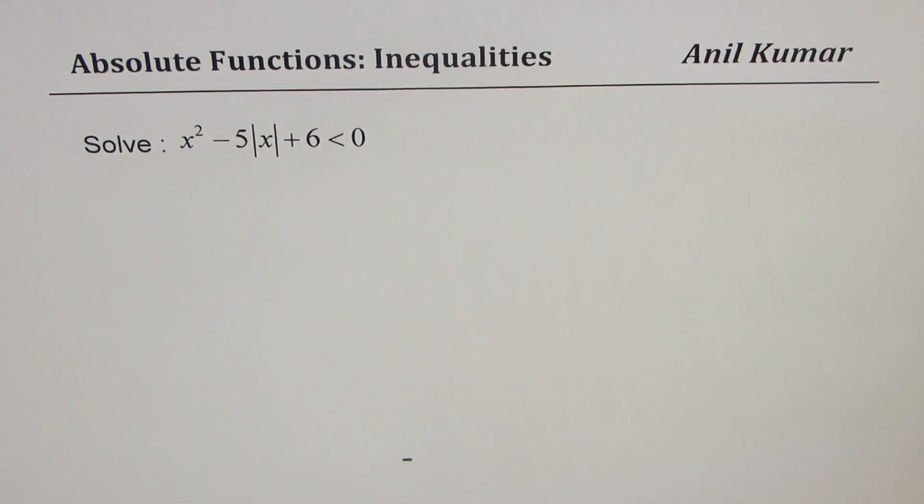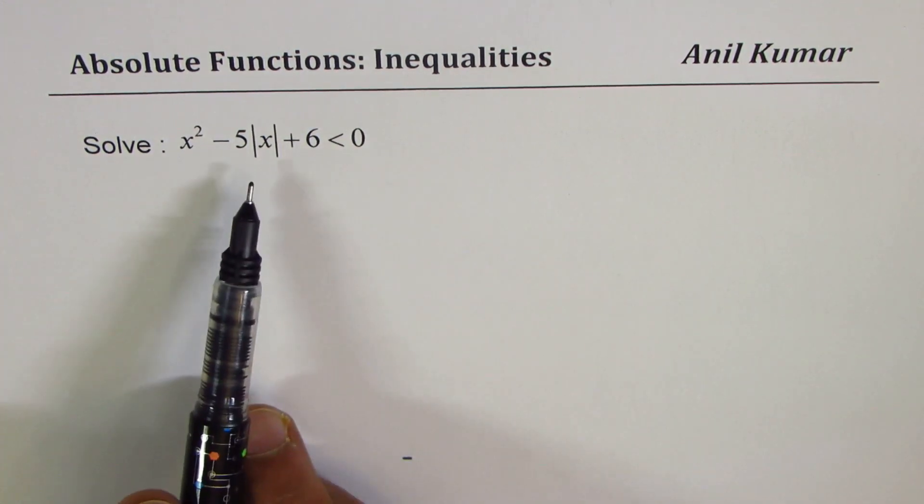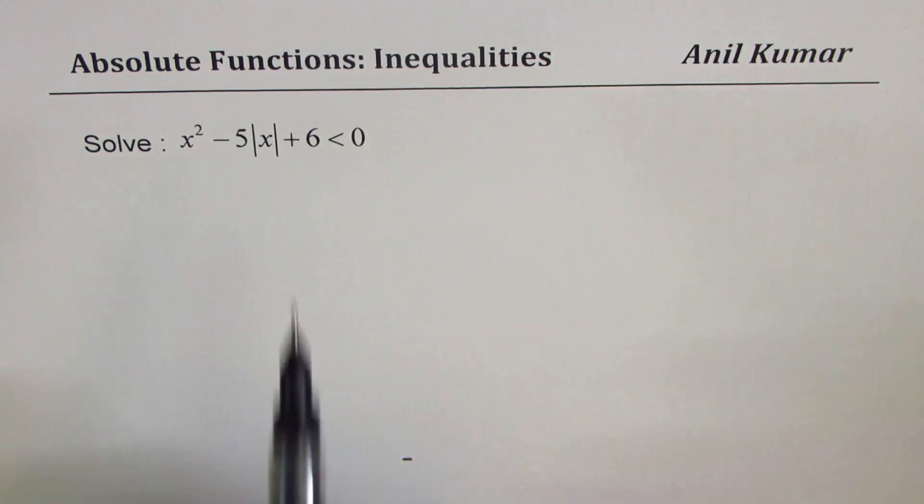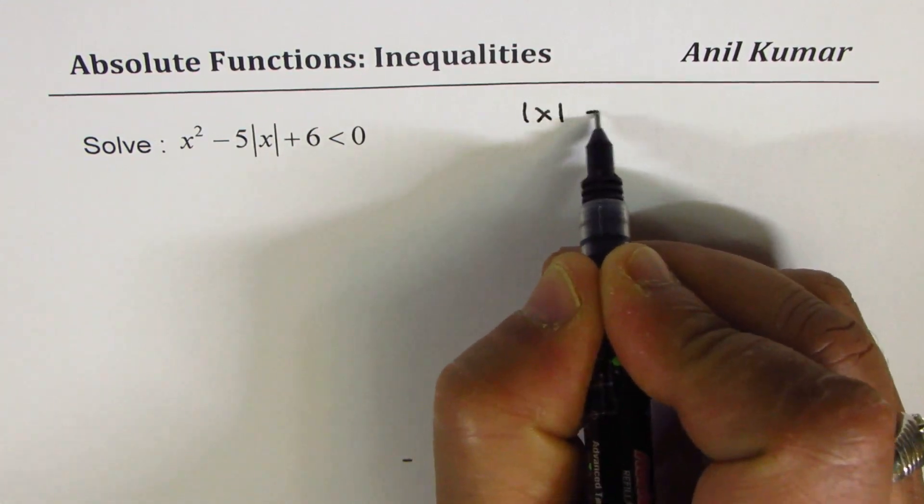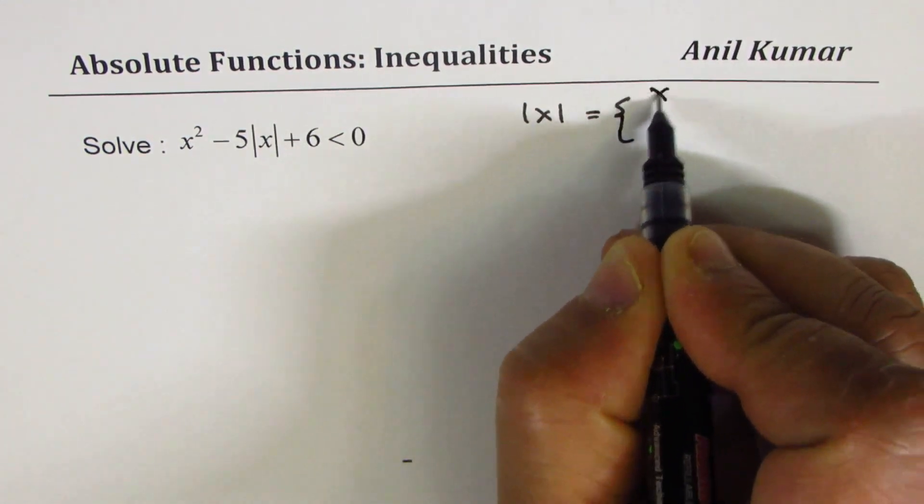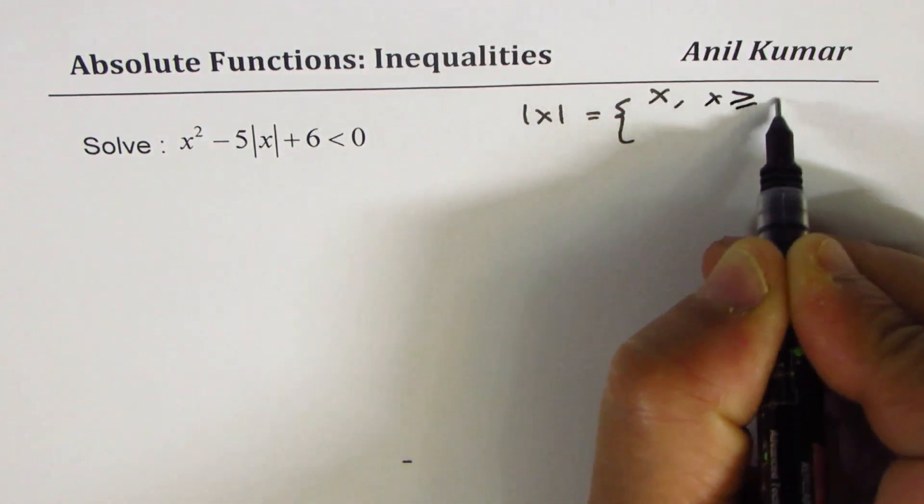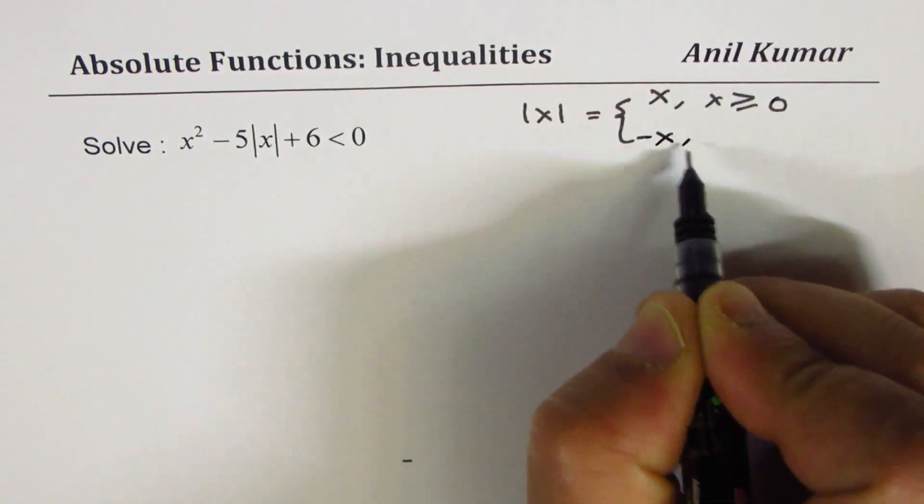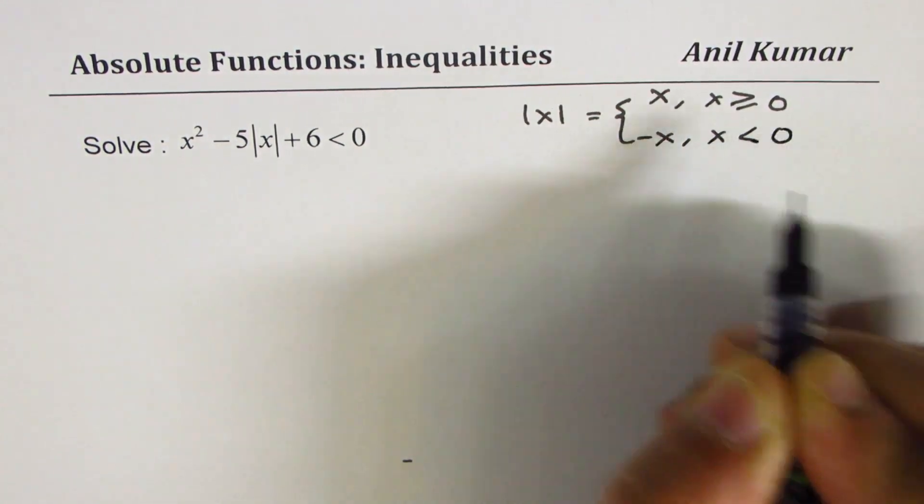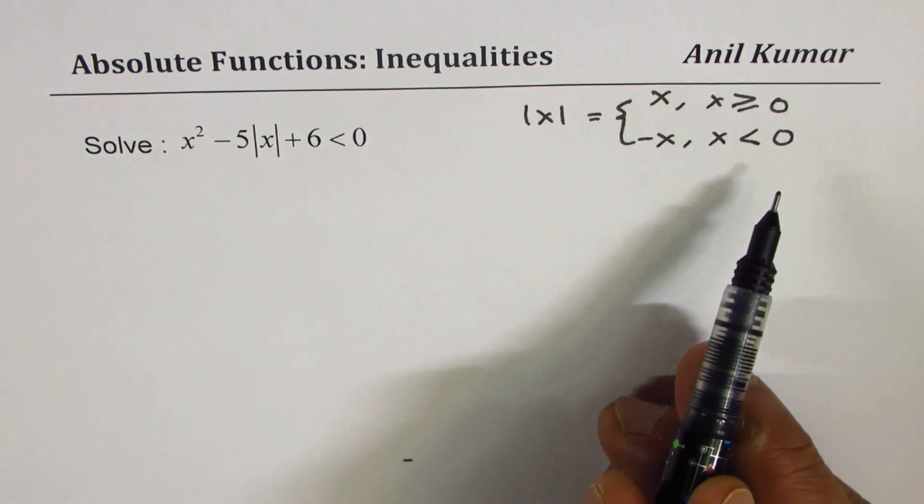For any absolute function, we should first redefine the function. Absolute value of x can be written as positive value of x for x greater than equal to zero and negative x for x less than zero. To begin with, that should be your first step.